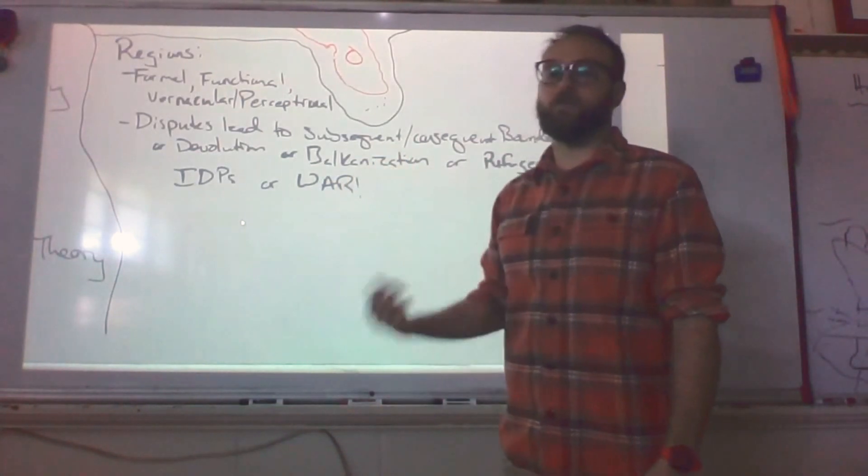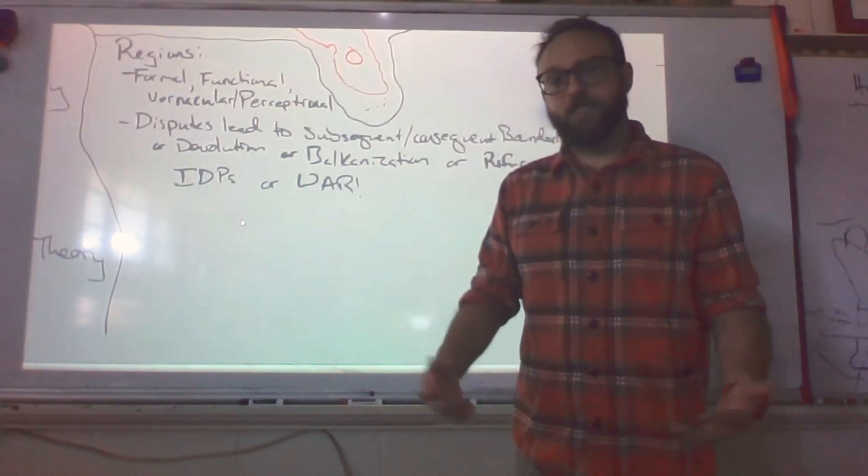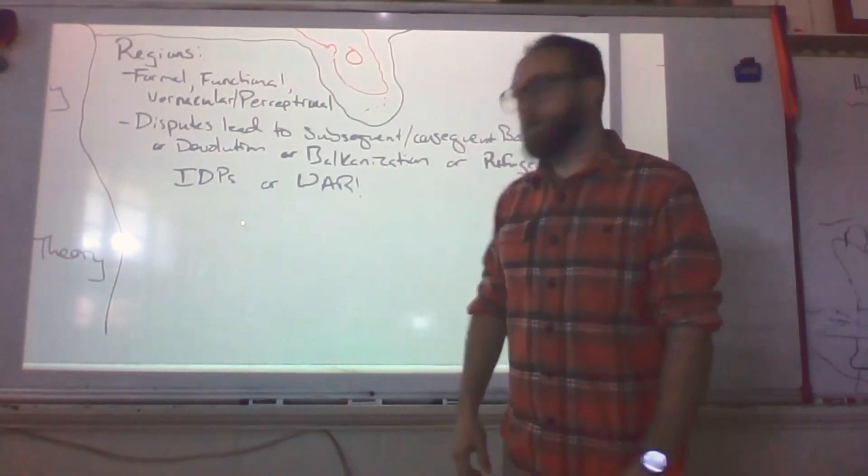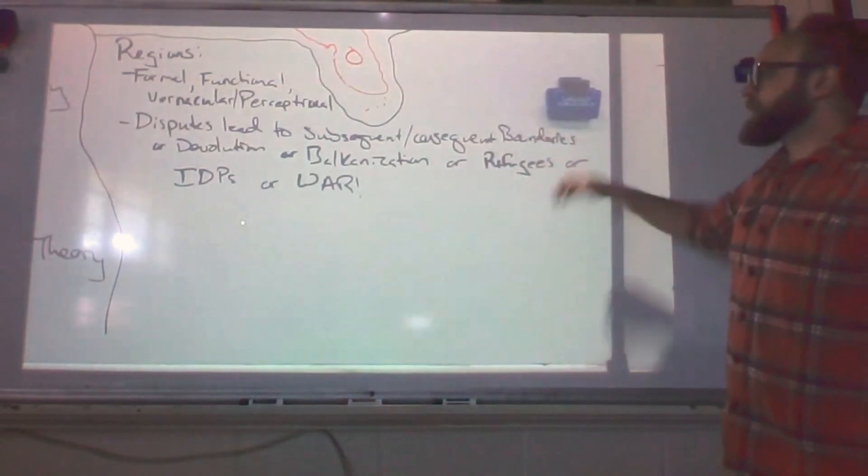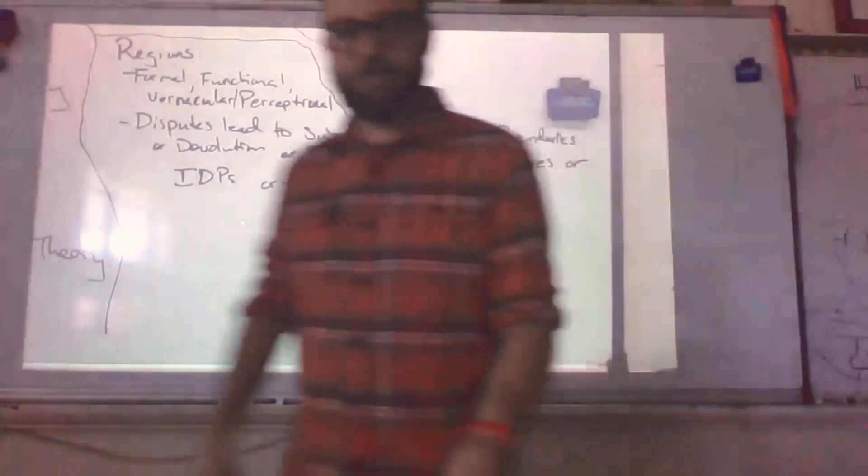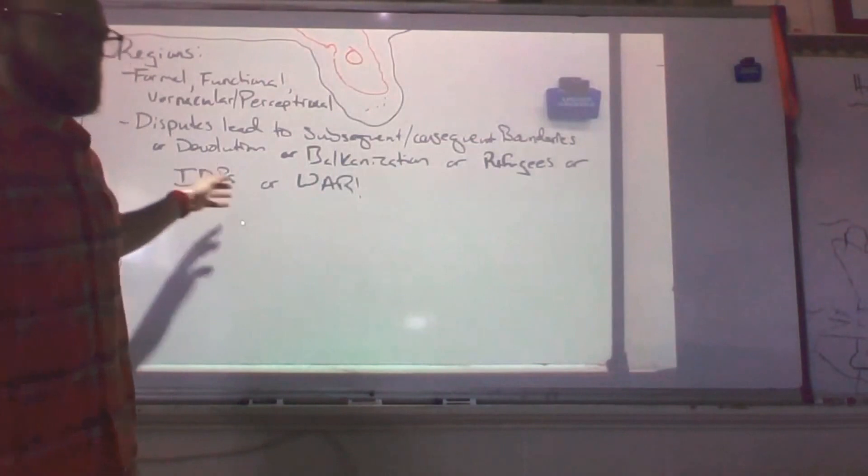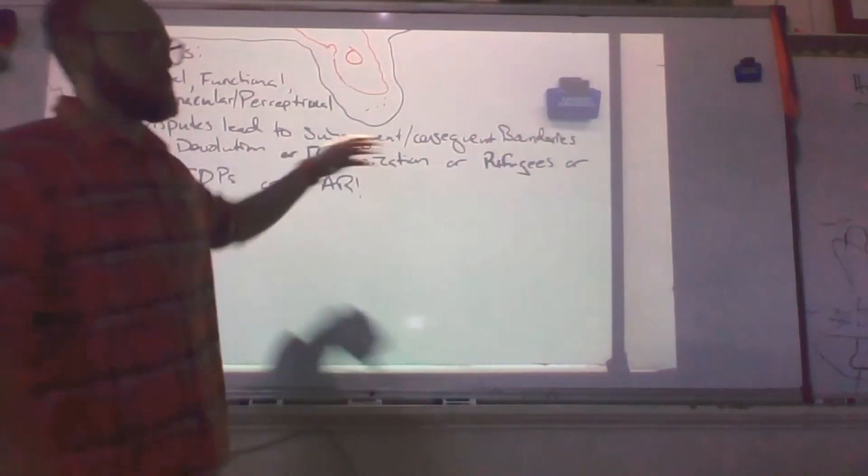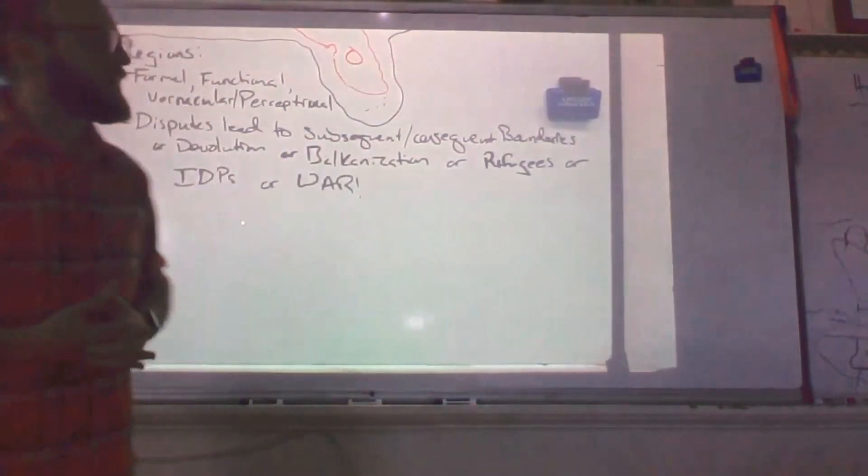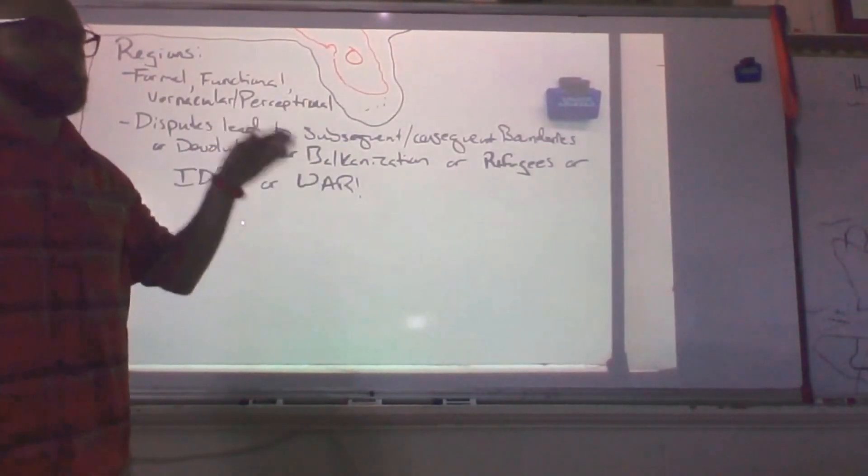Balkanization is the breaking up of a political unit due to centrifugal forces, usually ethnic differences, and the famous example is going to be Yugoslavia. And then finally, refugees, IDPs, or war. Clearly, these are not good things. A refugee is someone who's fleeing from a conflict of some kind, sometimes seeking asylum. An IDP is internally displaced, so sort of like a refugee, except you can't leave your country, you're stuck there. And clearly, worst case scenario, it's war, which is an escalation of all of these things.